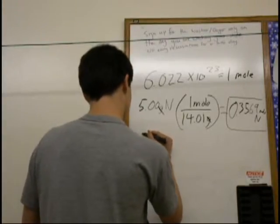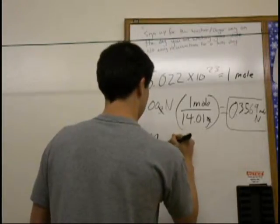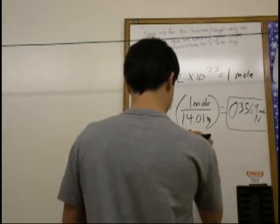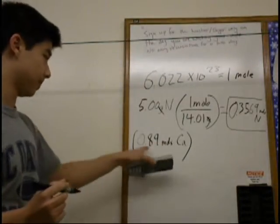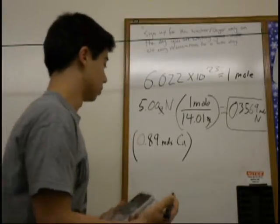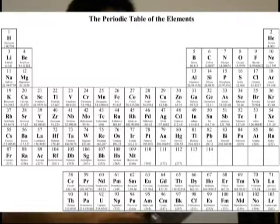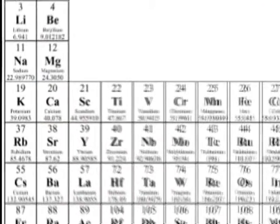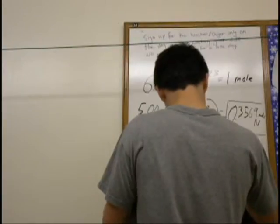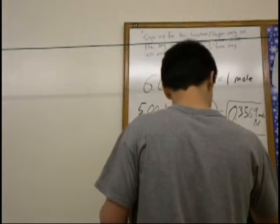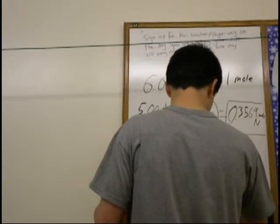Let's say if we have 0.89 moles of calcium, and we would like to find the grams of calcium when we know we have this many moles. So, we'll do a very similar thing. We will find the molar mass on the periodic table of calcium,